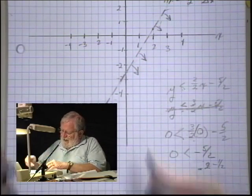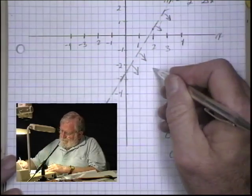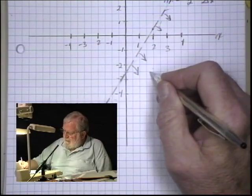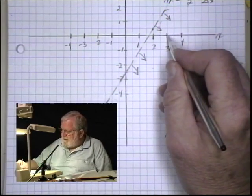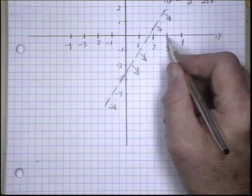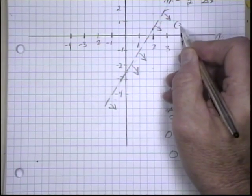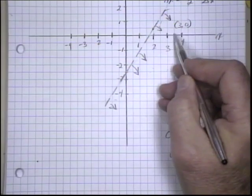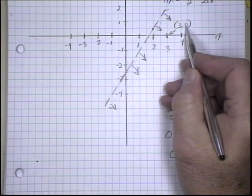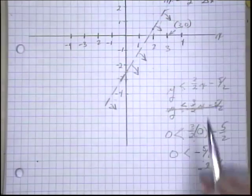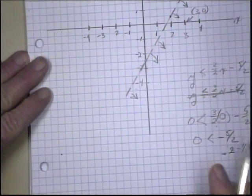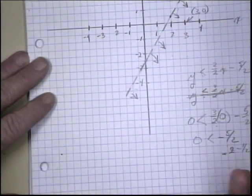Now let's find, just to prove that, let's take a point over here. And we could choose this as a point. This point is 3, 0, right? X is 3 and y is 0 on this point. So let's plug that into the inequality. And now it should be a true statement.